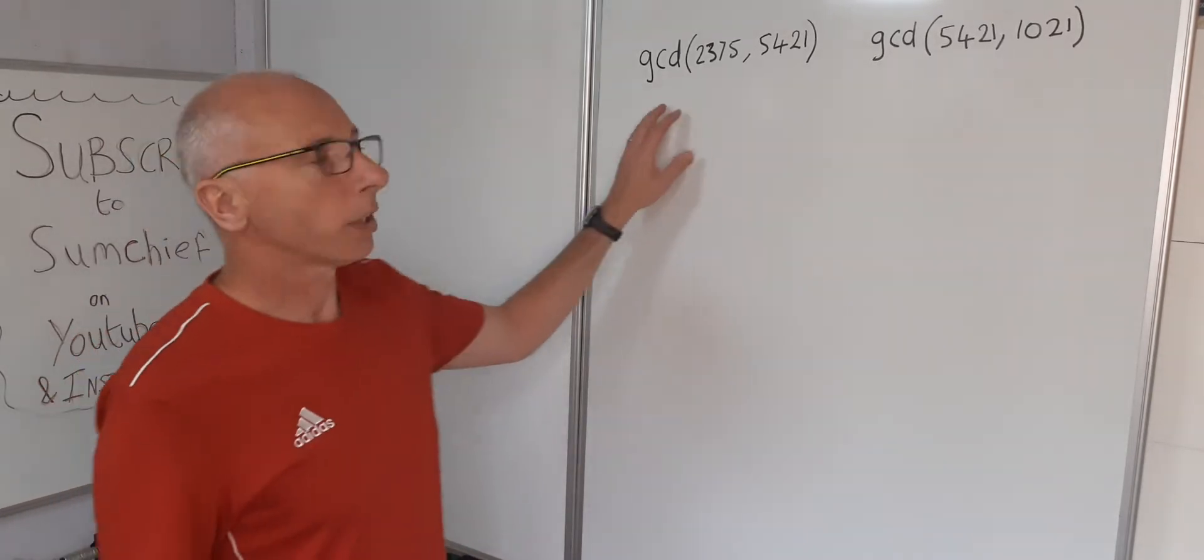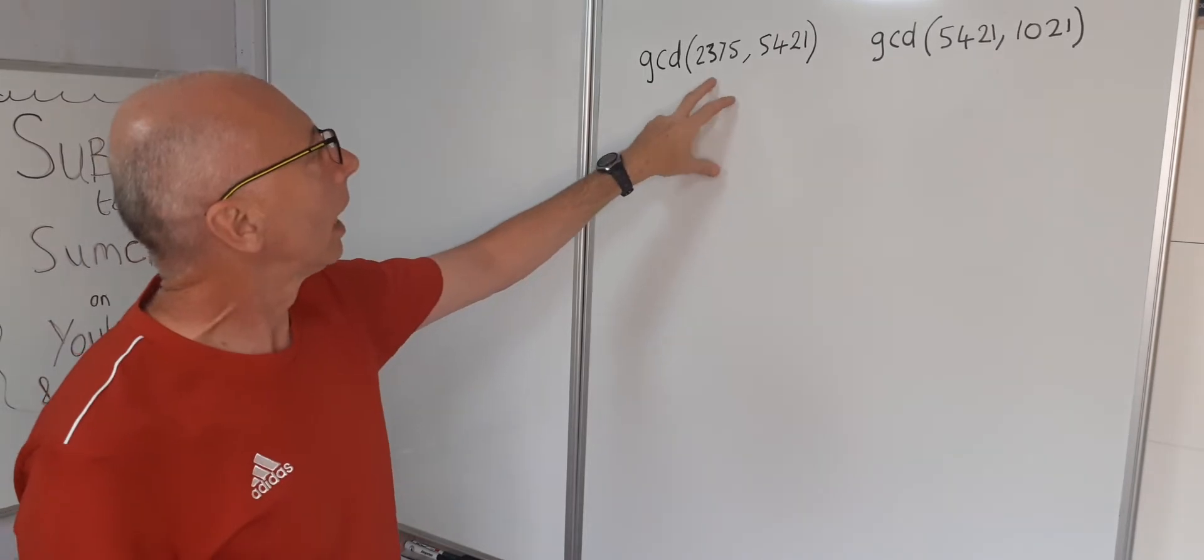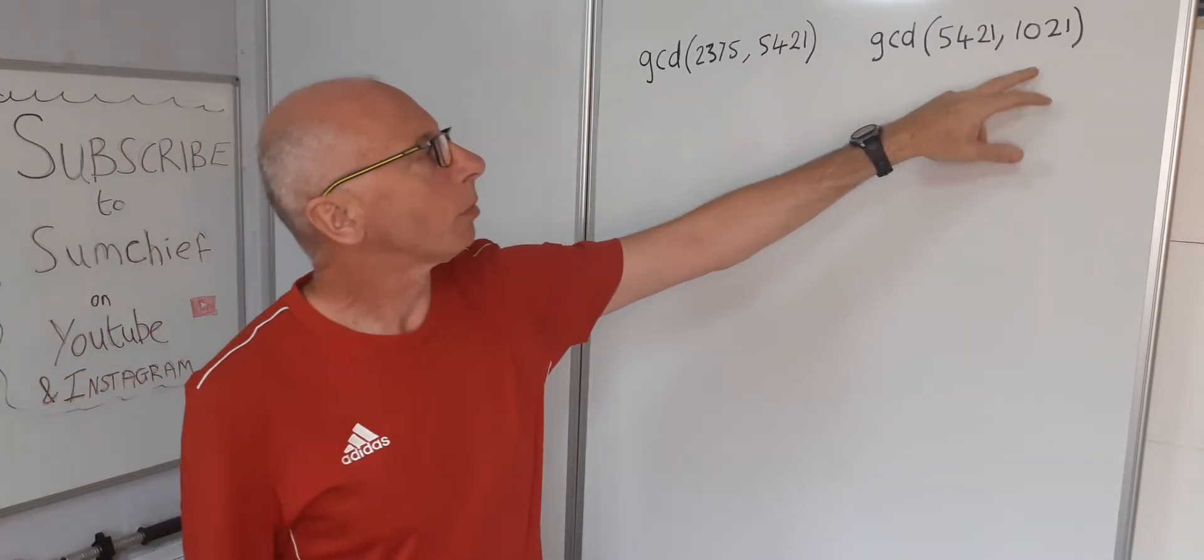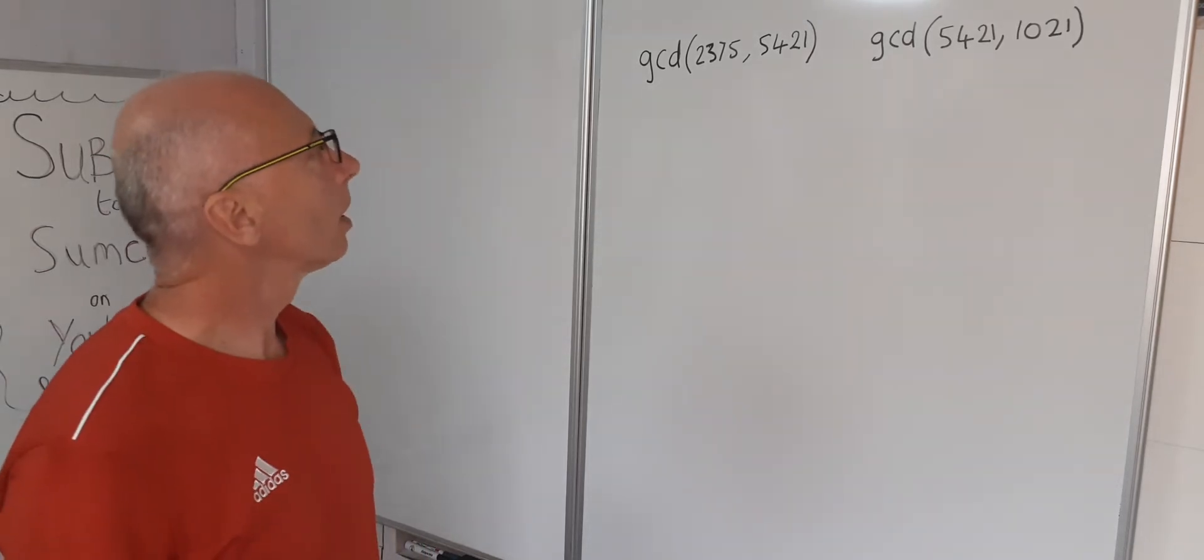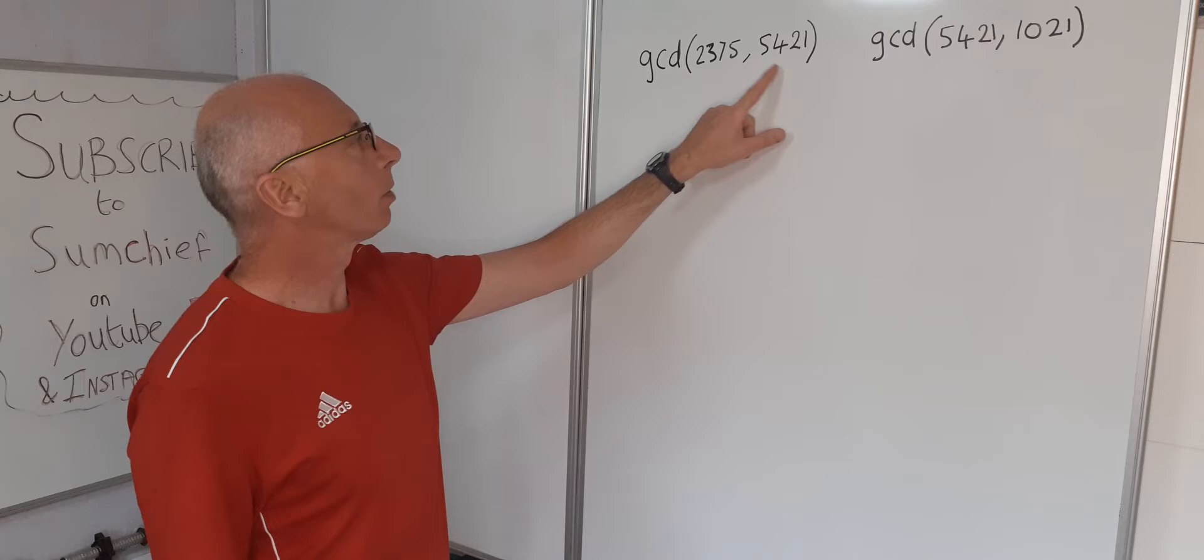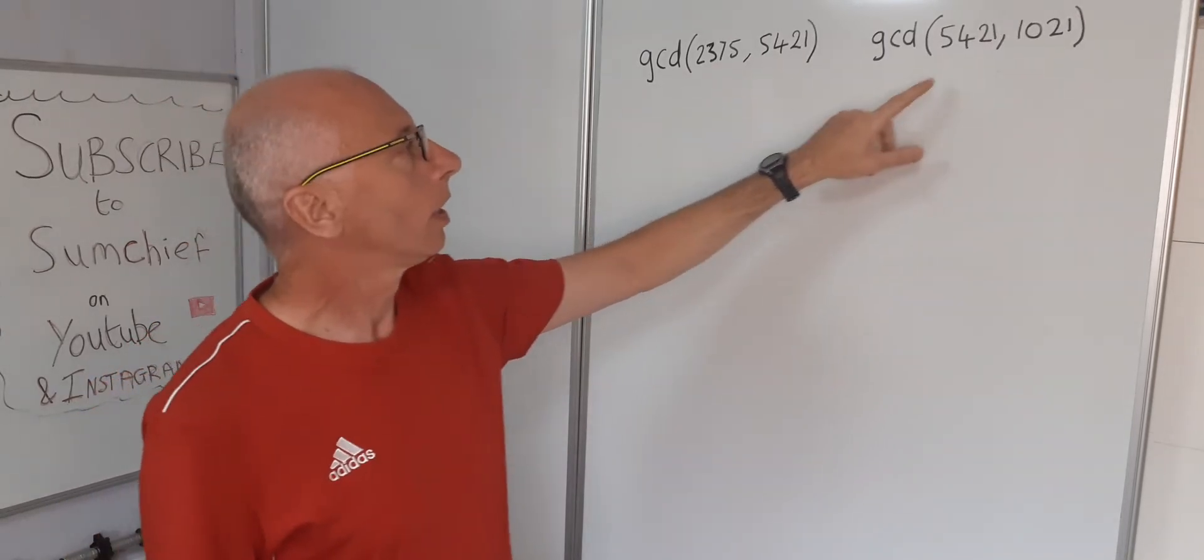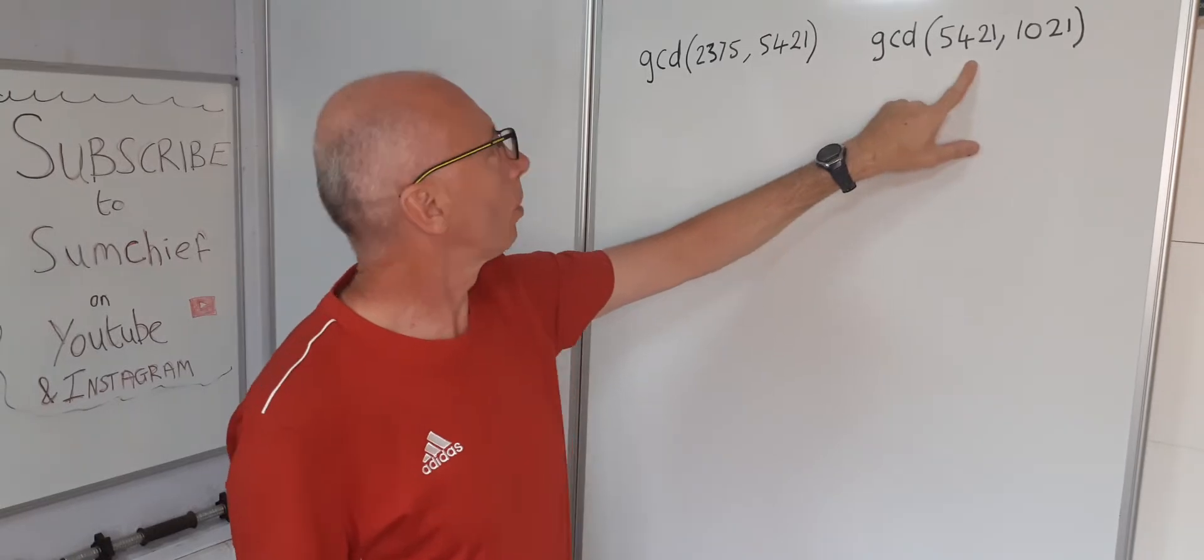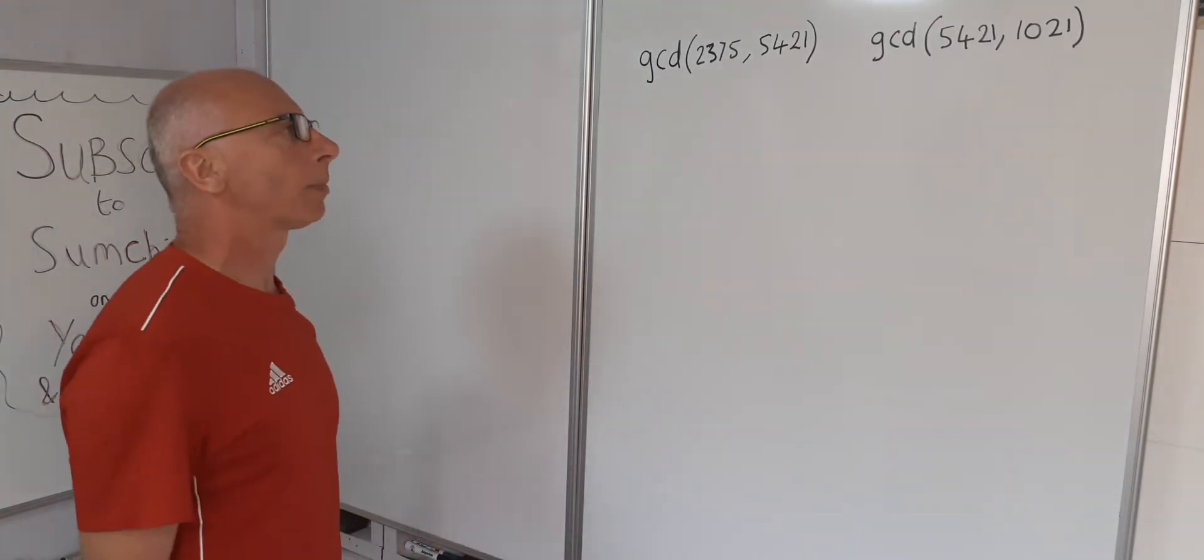In this video we're going to find the greatest common divisors of these two pairs of numbers. These are two big numbers which would be quite hard to work out without using an algorithm. So we're going to use Euclid's algorithm to find the divisors of 2375 and 5421, and again 5421 this time with 1021, and let's see what happens.